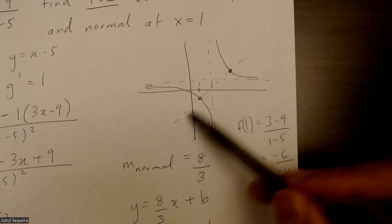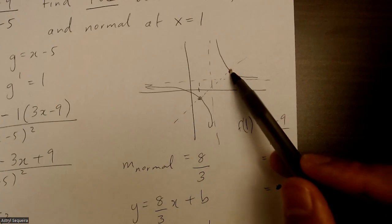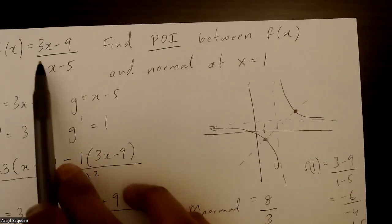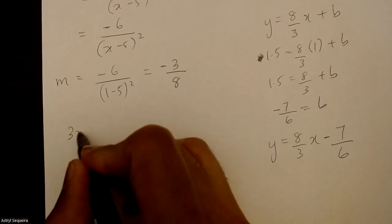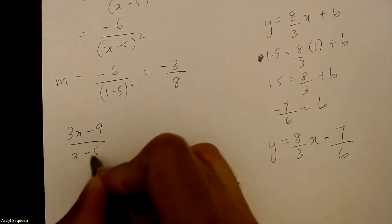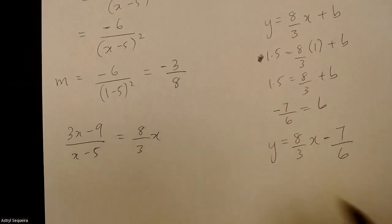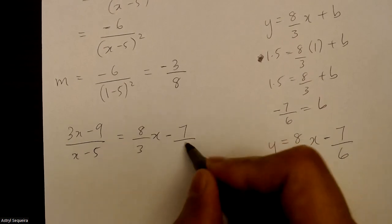That's the equation of this line here. So now I just need to find this point of intersection. To find this point of intersection, I just have to make the original equation here equal to this one and solve. So 3x minus 9 over x minus 5 is going to equal to 8 over 3x minus 7 over 6.